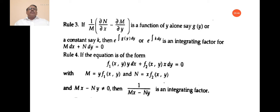Rule 4: If the equation is in the form f1(xy)·y dx + f2(xy)·x dy = 0, with M = y·f1(xy) and N = x·f2(xy), and Mx − Ny ≠ 0, then 1 by (Mx − Ny) is an integrating factor. Multiply the given equation by 1 by (Mx − Ny) and that equation becomes the exact differential equation.